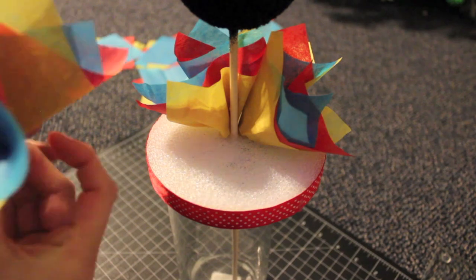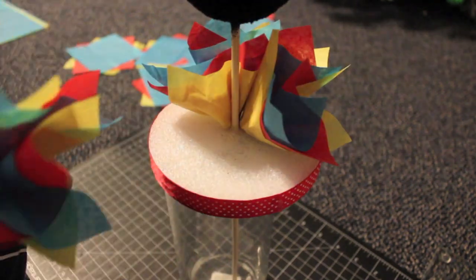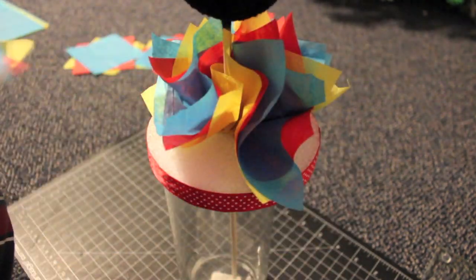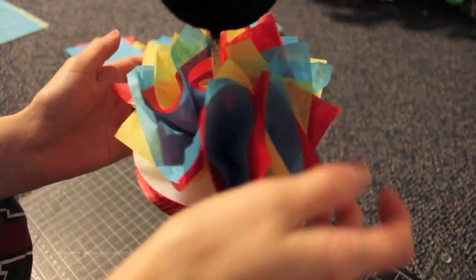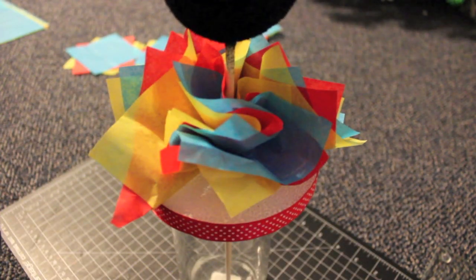Then you're just going to grab the flower and glue it onto the styrofoam plate. Each centerpiece has eight of these flowers, so when you first cut up the tissue paper, you have enough for two centerpieces.